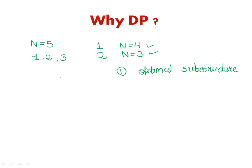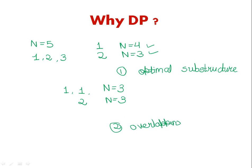That is the first condition of DP. Now for the second condition: if I pick 1, then pick 1 again, n becomes 3. Or if I pick 2, n also becomes 3. So we are getting the same sub-problems again and again — this problem has overlapping sub-problems.